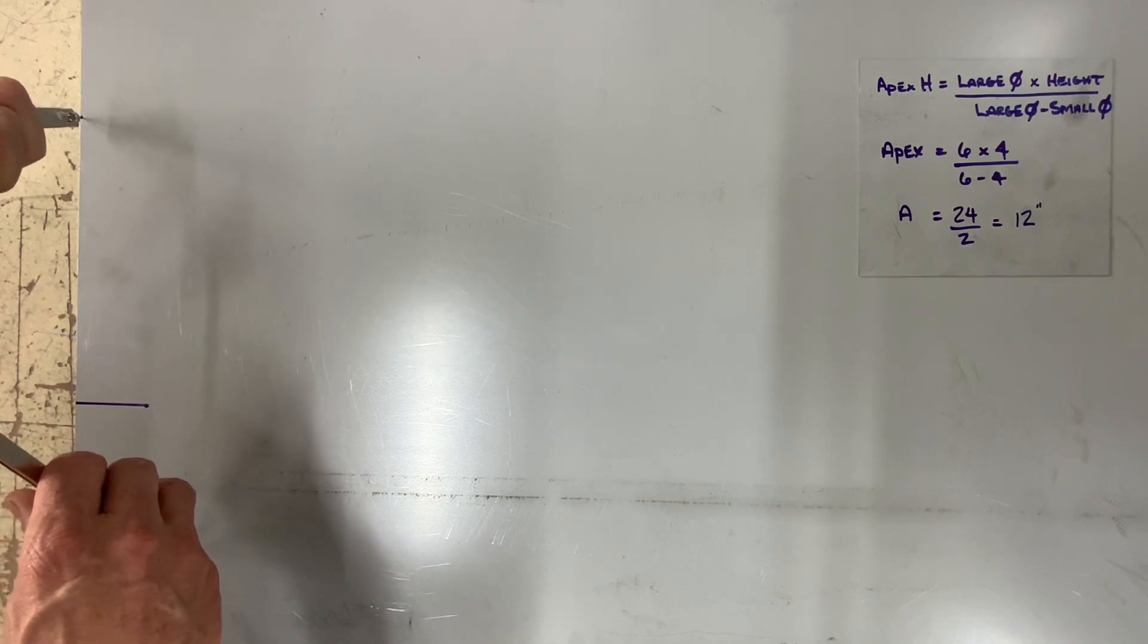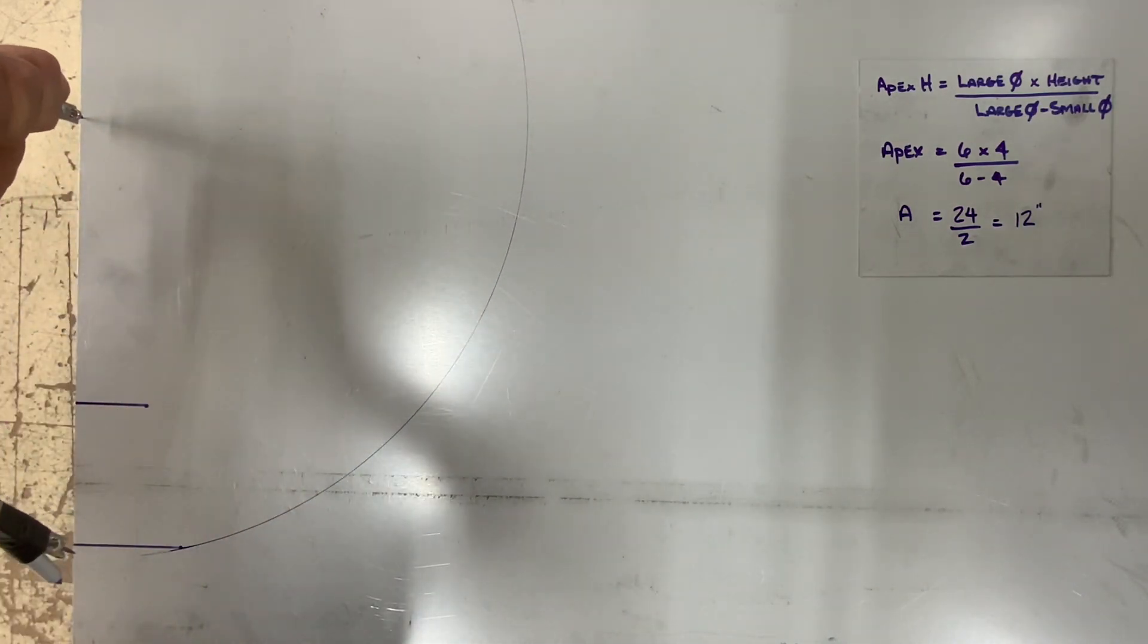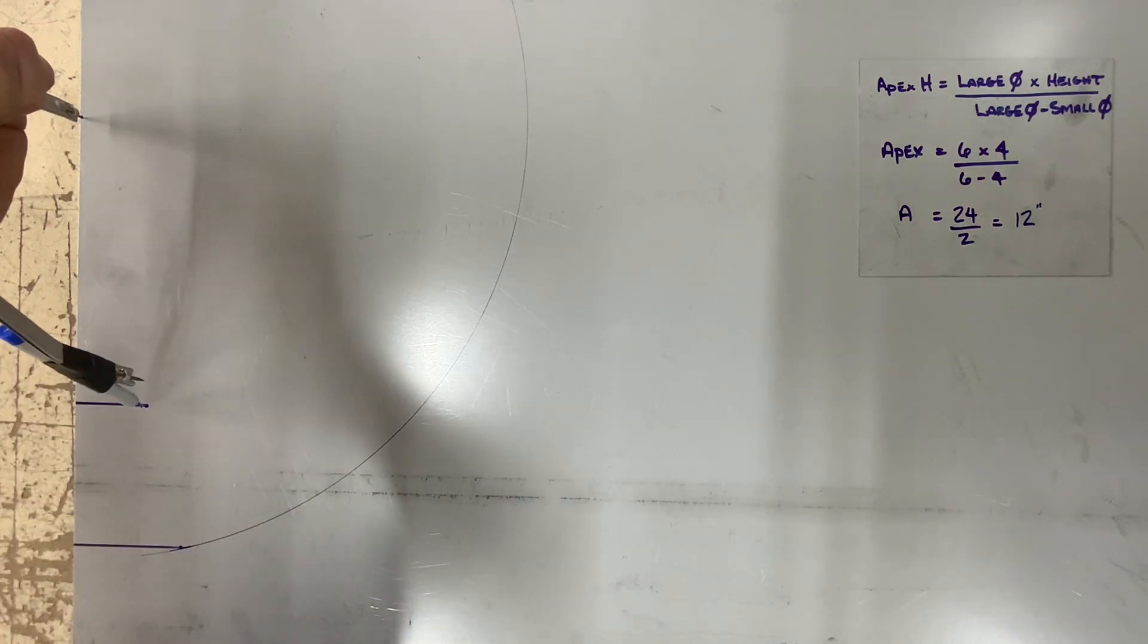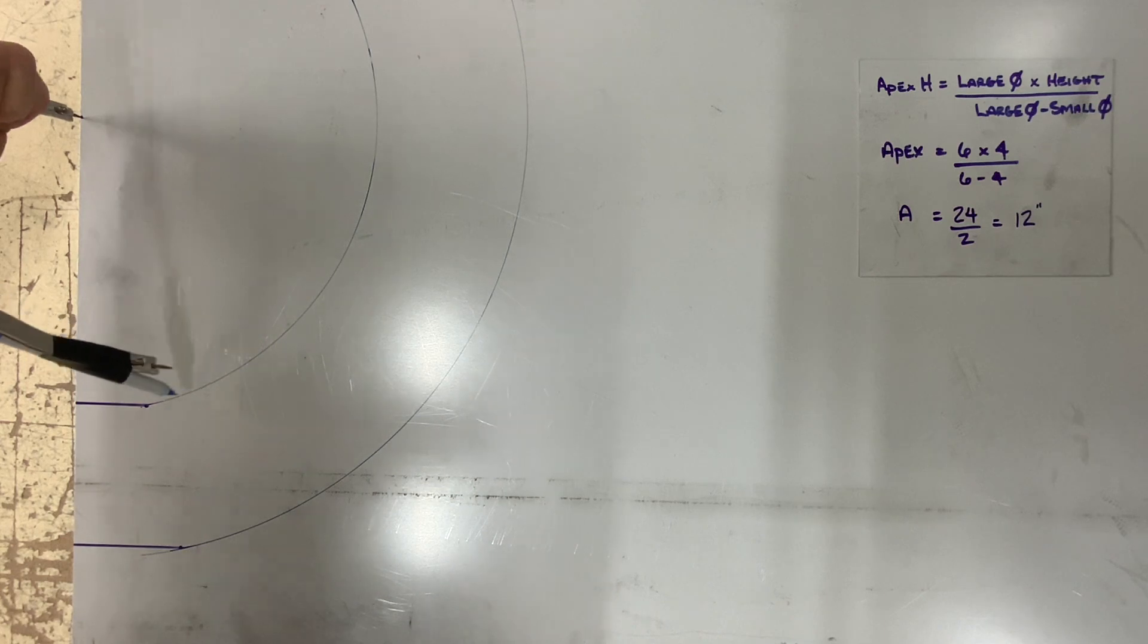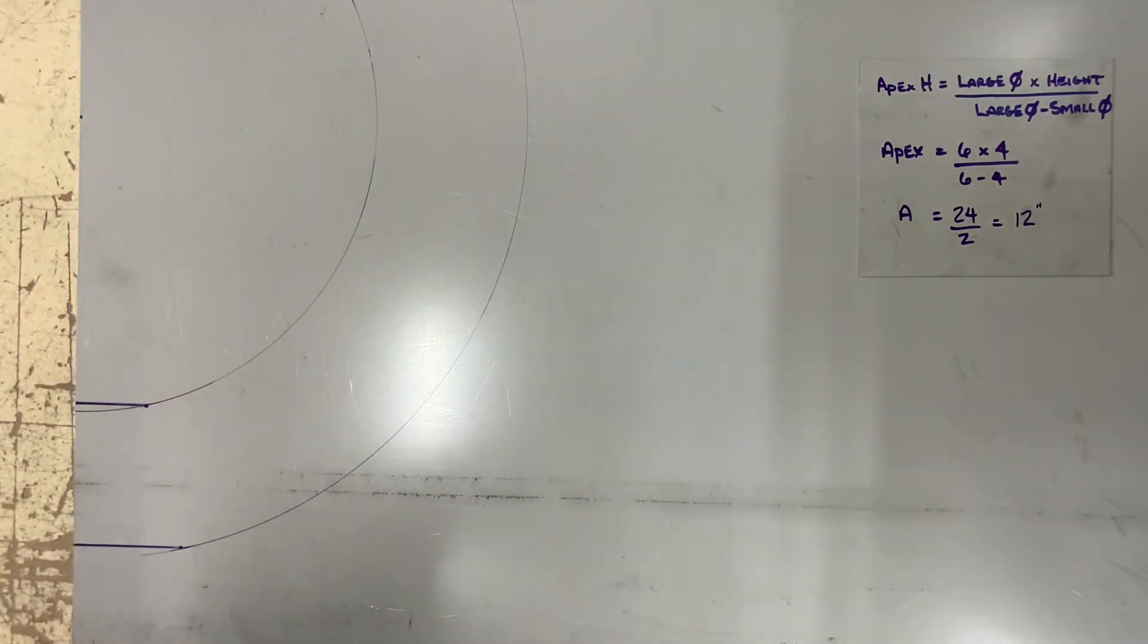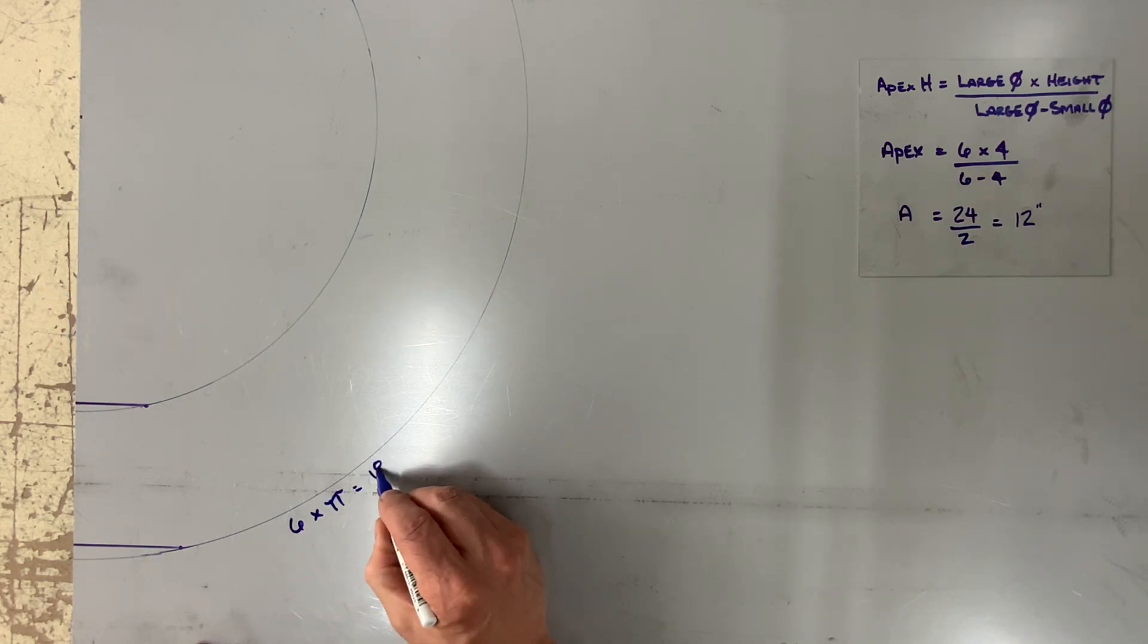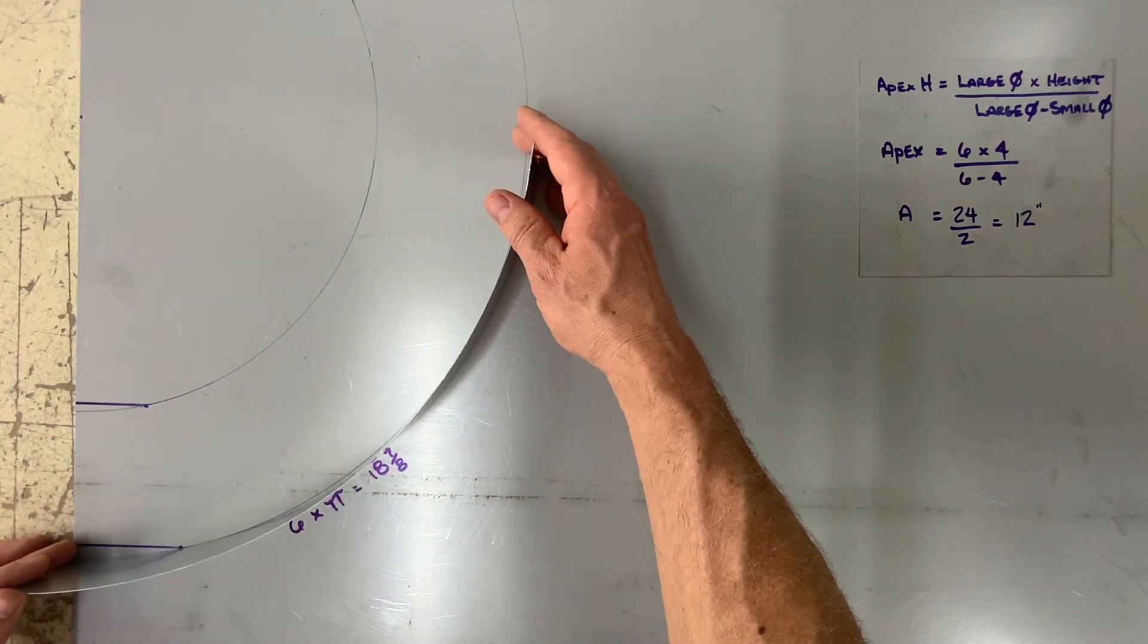Set your dividers from the apex point to the bottom three inch and strike an arc outward. And we know we must go up eighteen and seven eighths. Some of you might notice that this method requires a lot less drawing. In this case here I'm using the side of the sheet to start my pattern. Again, the base diameter is six times pi, eighteen and seven eighths.